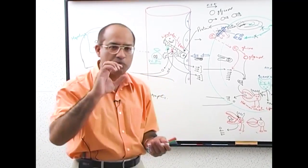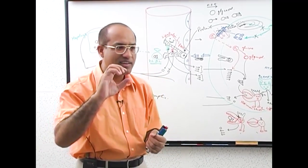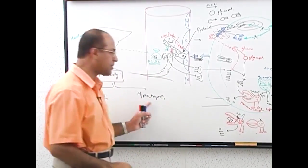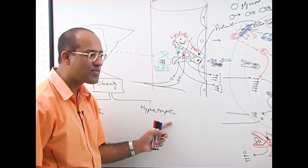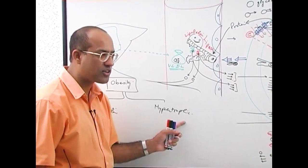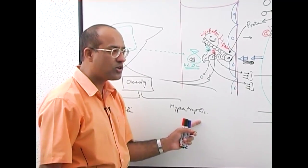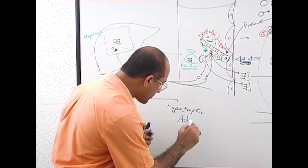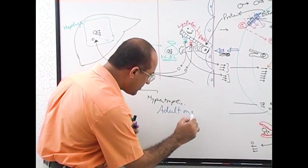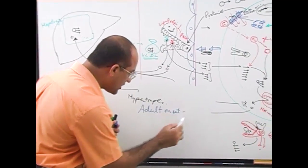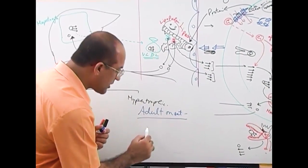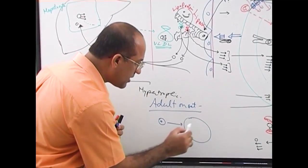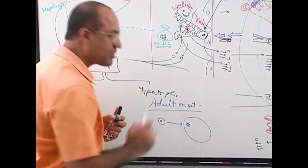This type of situation, when a small cell increases its size, is called hypertrophy. So adult onset obesity is hypertrophic. Hypertrophic means small fat cells will convert into a large fat cell.